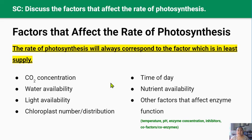Any factor that affects enzyme function — like temperature, pH, enzyme concentration, substrate concentration, inhibitors, and cofactors and coenzymes — will affect the rate of photosynthesis because the light-dependent and light-independent reactions are all catalyzed by enzymes. Nutrient availability is also on that list because many nutrients are coenzymes and cofactors to enzymes involved in photosynthesis.